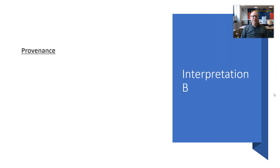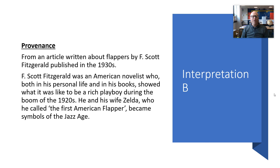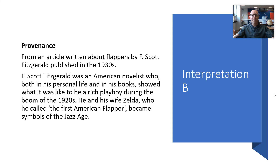For interpretation B, the provenance is an article written about flappers by F. Scott Fitzgerald, published in the 1930s. He's famous for writing The Great Gatsby. He was a novelist who, both in his personal life and his books, showed what it was like to be a rich playboy during the boom years of the 1920s. He and his wife Zelda, who became called the first American flapper, became a symbol of the jazz age. So who is F. Scott Fitzgerald going to have spent most of his time around? The flappers. Who does he know most about? The flappers. As far as Fitzgerald was aware, what lifestyle did women have? The flapper lifestyle. Therefore, he is going to focus on what he knows about the flapper.